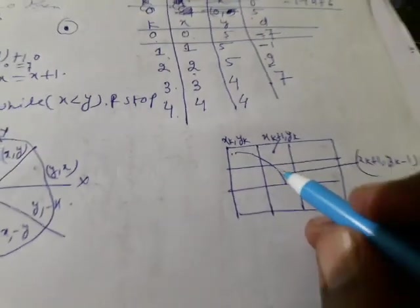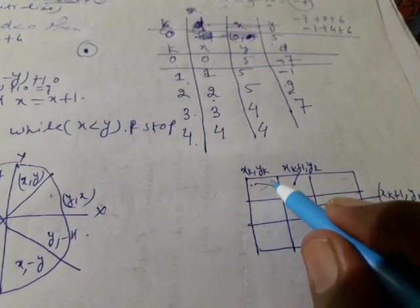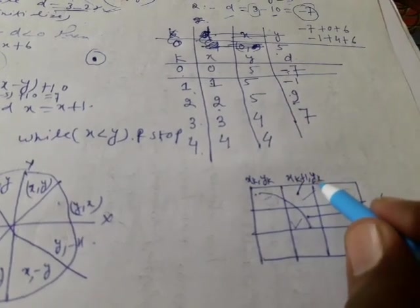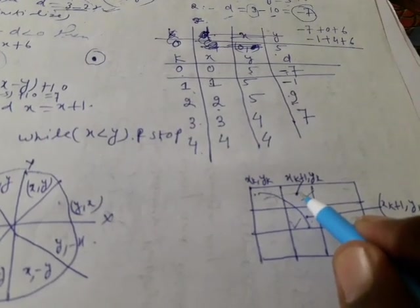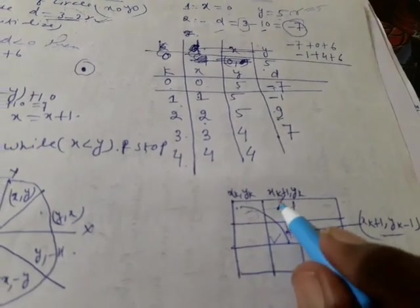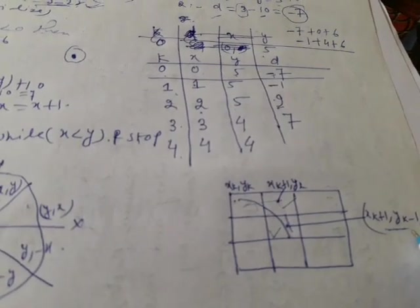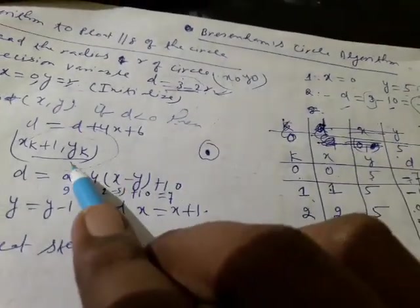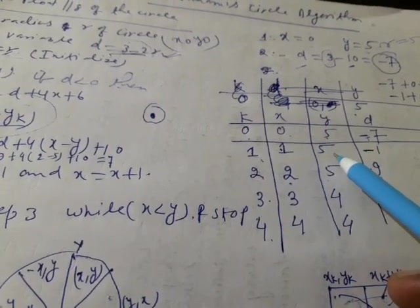You can see here the circle crosses a pixel. If I select one option, I move x by 1 unit and y stays the same. If I select the other, I increase x by 1 unit and decrease y by 1 unit. So: if d less than 0, increase x by 1, y remains the same. If d greater than or equal to 0, increase x by 1 and decrease y by 1.